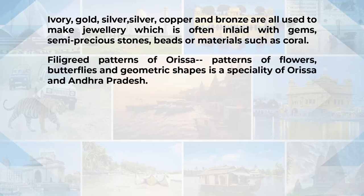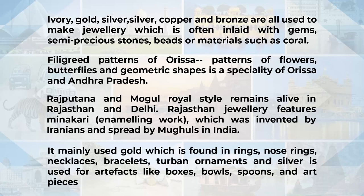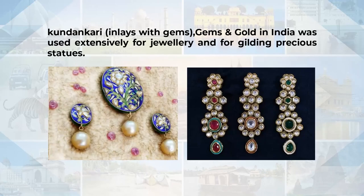The filigree patterns of Odisha are very popular, featuring flowers, butterflies and geometric shapes. Rajputana and Mughal royal style remains alive in Rajasthan and Delhi. Rajasthan jewellery features Meenakari — enamel work invented by Iranians and spread by Mughals in India — mainly used in gold for rings, nose rings, necklaces, bracelets and turban ornaments, while silver is used for boxes, bowls, spoons and art pieces. Kundankari — inlaid with gems — was also very popular all over India.